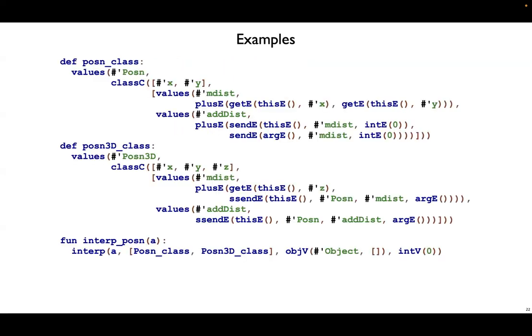To interpret some more interesting examples, we need more code. Here's code that defines first a posn class and then a posn3d class, and these two are just like what we saw in the last video. A posn has x and y fields and two methods. A posn3d has x, y, and z fields and the same two methods.